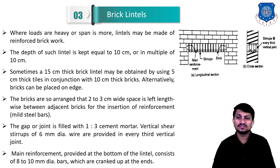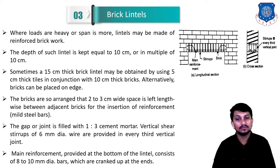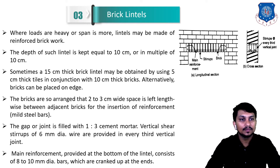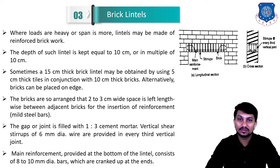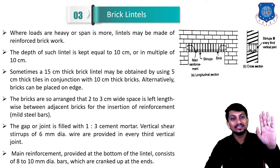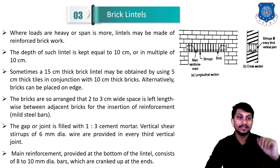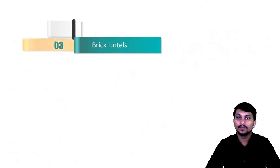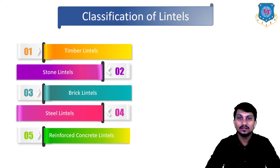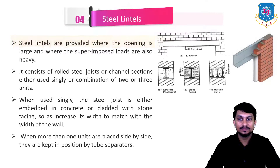The main reinforcement provided at the bottom of the lintel consists of 8 to 10 mm diameter mild steel bars, which are cranked up at the ends. You can clearly see the longitudinal section and cross-section of the reinforced brick lintel. That is all about brick lintels.